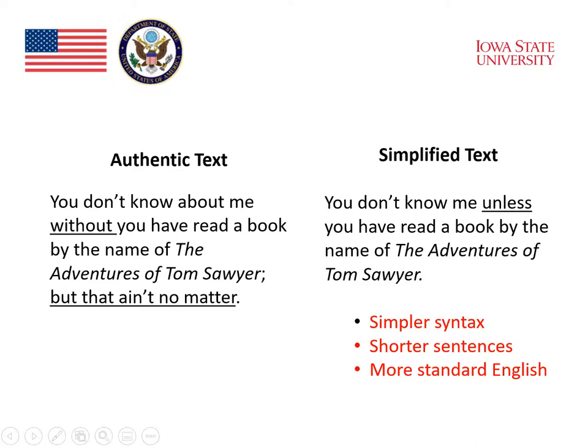We can take a look at some of the characteristics of the language just by putting the authentic text side by side with the simplified text. The first sentence — "You don't know about me without you have read a book by the name of the Adventures of Tom Sawyer" — is simplified to: "You don't know me unless you have read a book by the name of the Adventures of Tom Sawyer." In the simplified version, the second part of the sentence after the semicolon, "but that ain't no matter," is simply deleted.